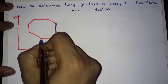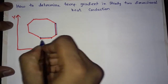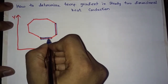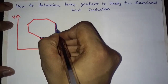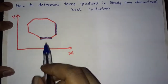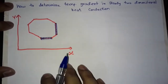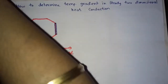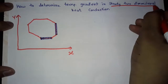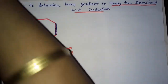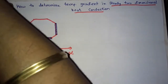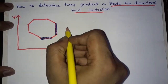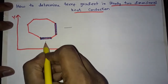These two sides are not insulated, and these two sides are not insulated, and the remaining sides are insulated. In this case, as we mentioned, steady two-dimensional heat conduction is present, so heat transfer is taking place in this direction and in this direction.